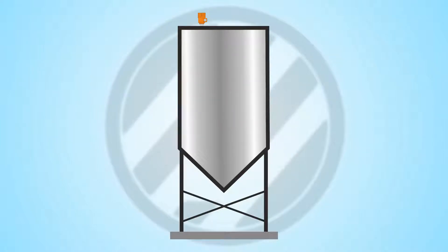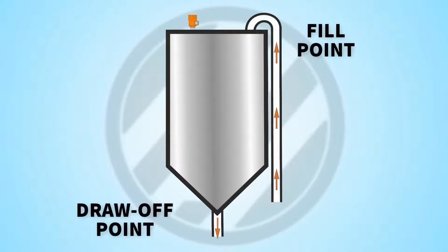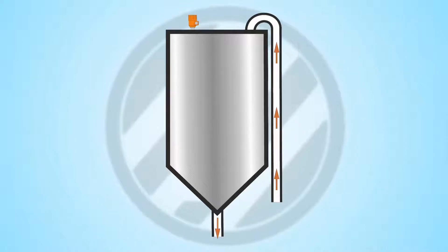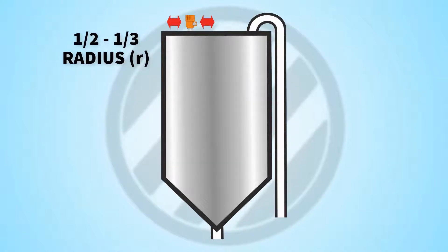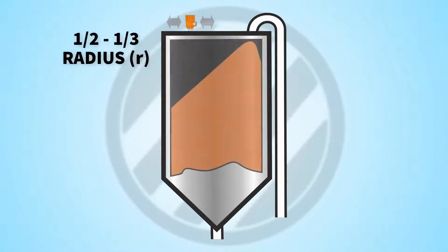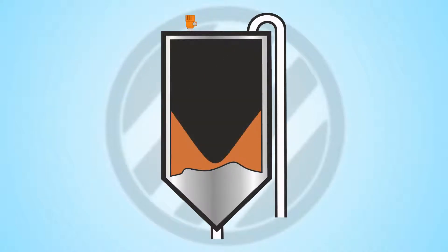Firstly, we need to note key information about the silo. We need to know where it's filled from — this will be via a fill pipe in the top part of the vessel — and where the silo draw-off point is. The radar must be mounted away from the fill pipe to avoid false readings. The recommended positioning is about half radius to one third radius, which gives a good average of the level during filling and emptying, both of which will have a conical shape.